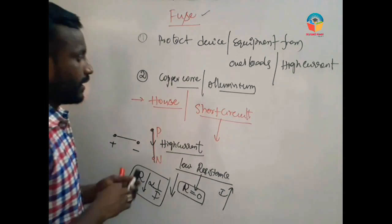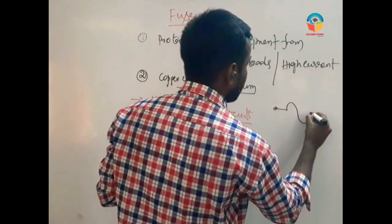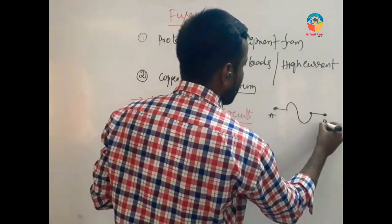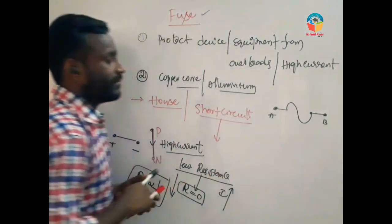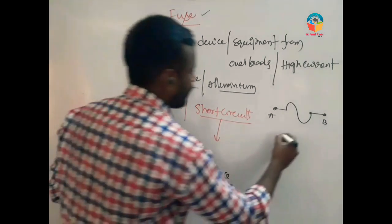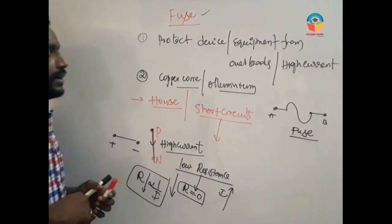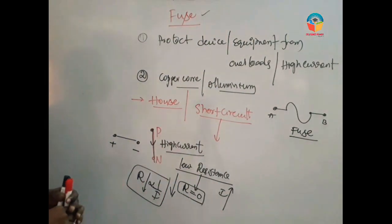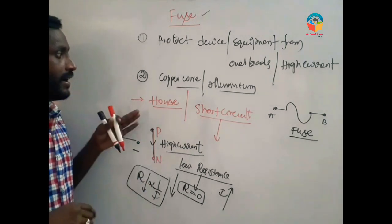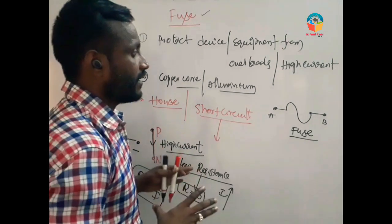That component is called a fuse. The symbol of the fuse has two terminals: A and B. The name of this component is fuse. This fuse protects our devices, our system, and our equipment from overload current and high current.